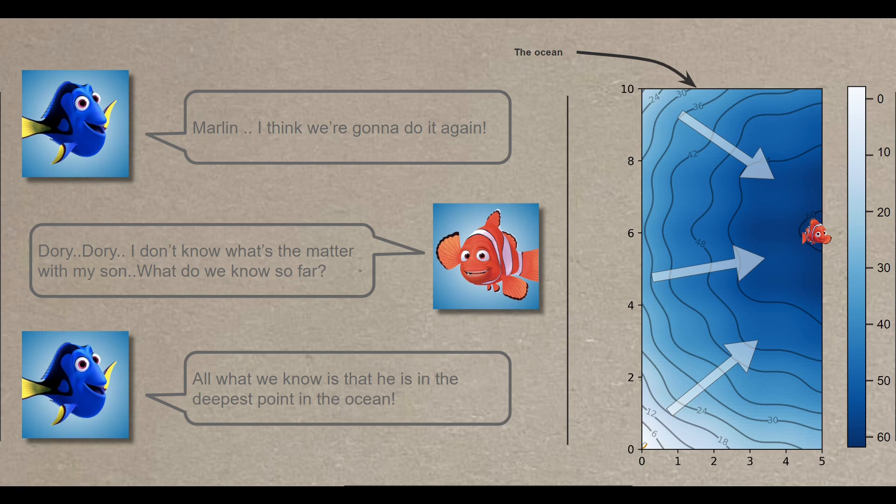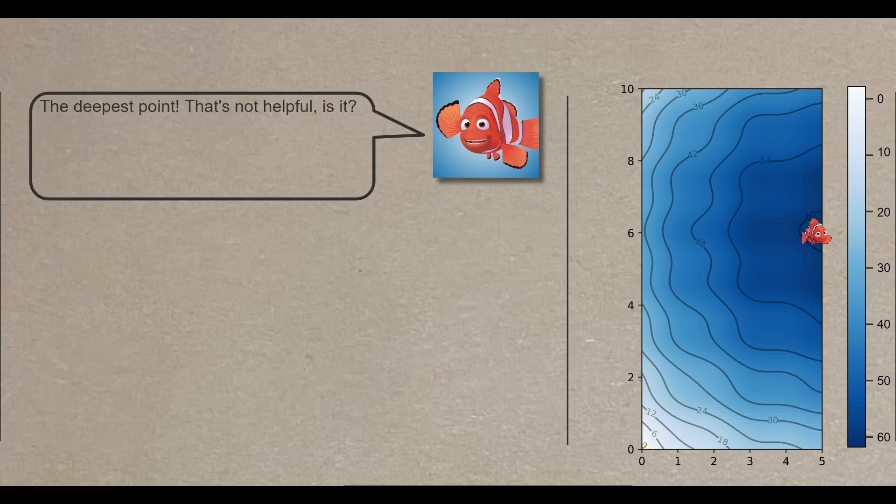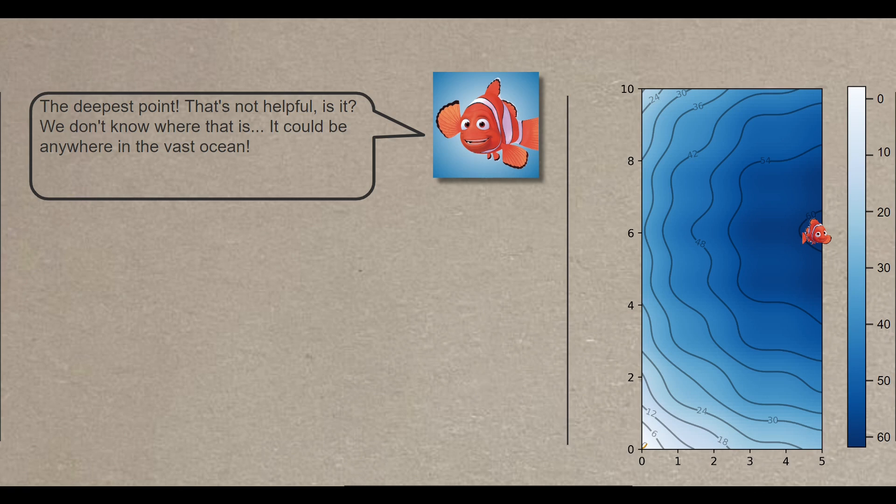In real-life scenario, this ocean bed could represent any function that you need to maximize. More on that at the end of the video. The deepest point? That's not helpful, is it? We don't know where that is. It could be anywhere in this vast ocean. Does that mean we need to search every single point in the ocean?